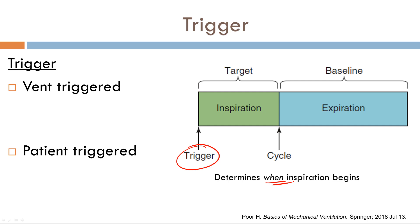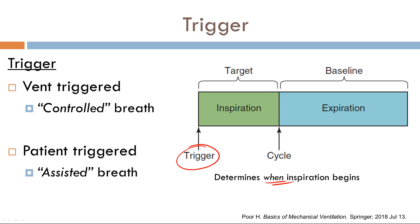Now let's refine our terminology. If you have a ventilator-triggered breath, moving forward we'll be calling that a controlled breath. Any ventilator-triggered breath from now on will be called a controlled breath. If you have a patient-triggered breath, that is known as an assisted breath.